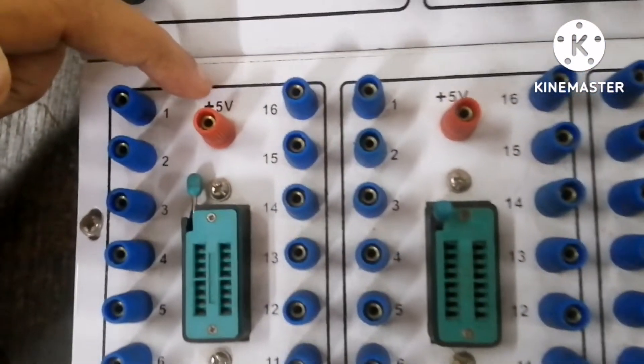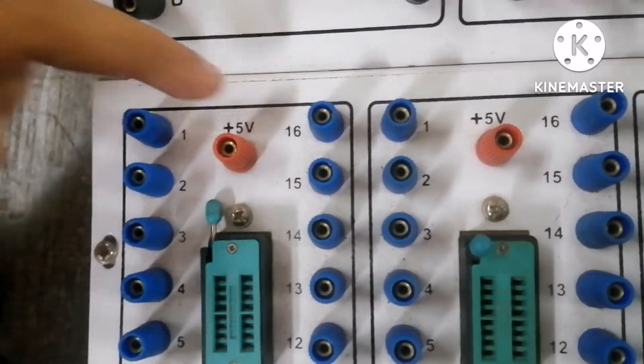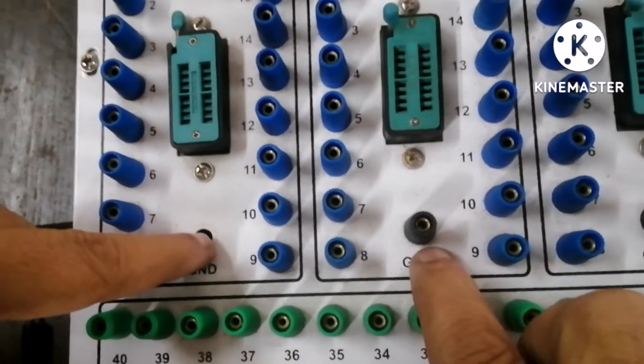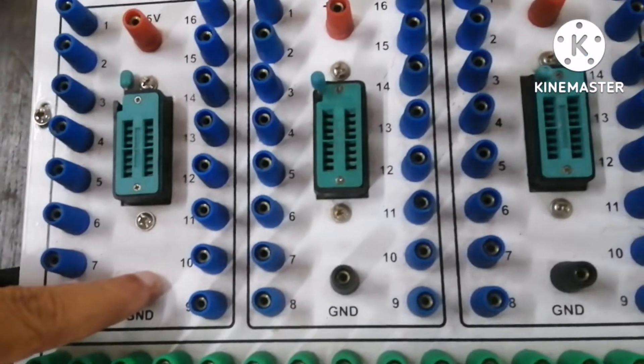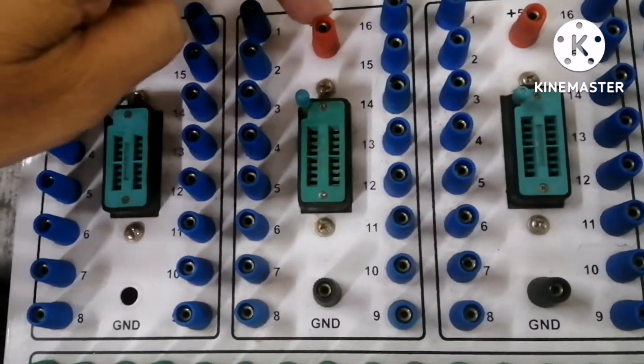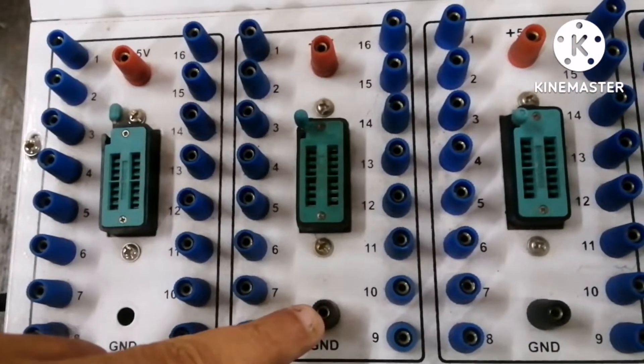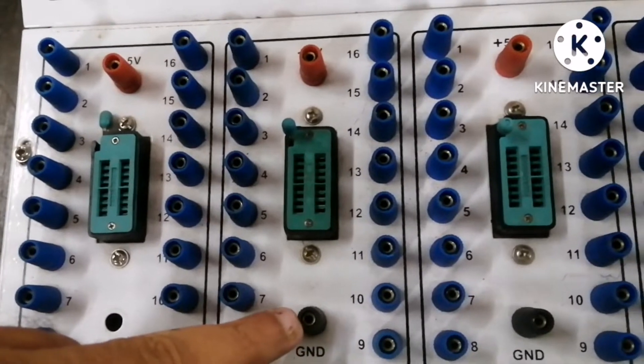And this is VCC, that is plus 5 volts, and this is the ground button. So each IC requires compulsory one VCC and ground button, without which the IC cannot operate.